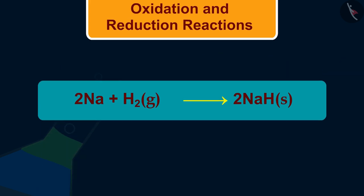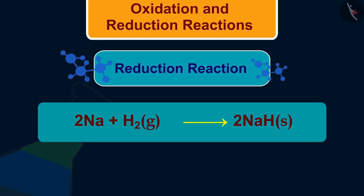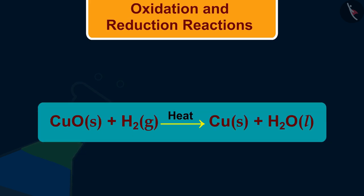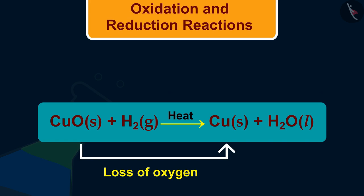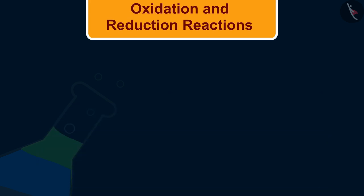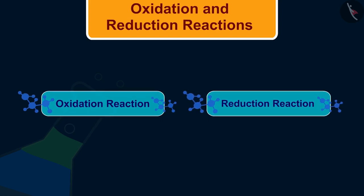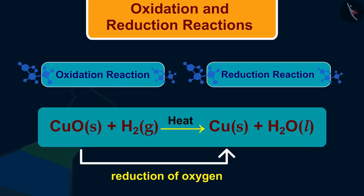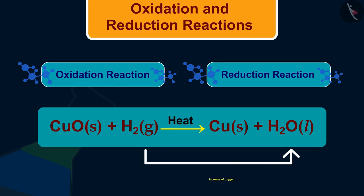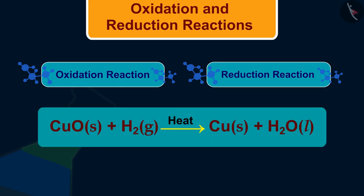In the first example, hydrogen is increased in sodium — hence it is an example of reduction. In the second example, there is a decrease of oxygen in copper oxide and an increase of oxygen in hydrogen. As we see, the reduction of oxygen from copper oxide is reduction, and the increase of oxygen in hydrogen is oxidation, happening in the same reaction.